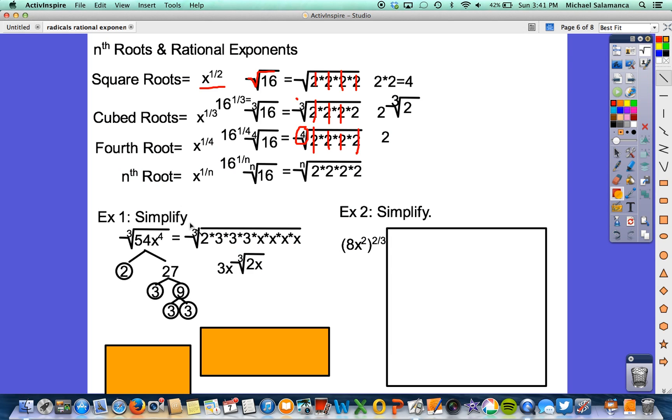We have, it's a cubed root, so again we're looking for 3. I have 3 3's, 1, 2, 3. I can pull that out and write it down right here. I have 3 x's, 1, 2, 3. And then I could write that x down right here. The leftovers are 2 and x. So we keep that in the cubed root. So the cubed root of 2x.